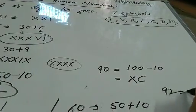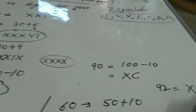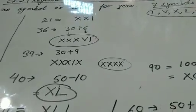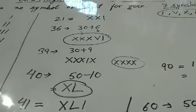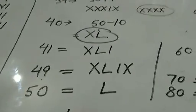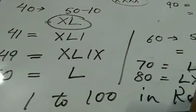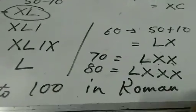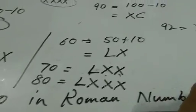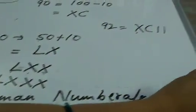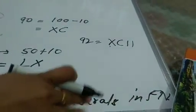92 लिखना है: XC for 90, plus II for 2 — that is XCII. So today your homework is you have to write down 1 to 100 in Roman numerals in your fair notebook. Thank you.